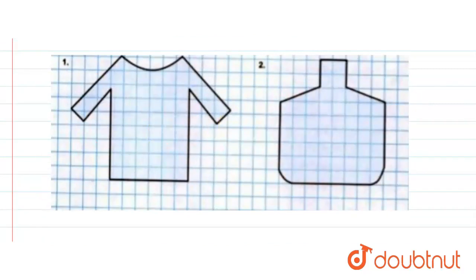First of all, let us see the first figure. We just count the number of perfect squares in this figure, and then we add the partial squares by pairing them together to make a perfect square.